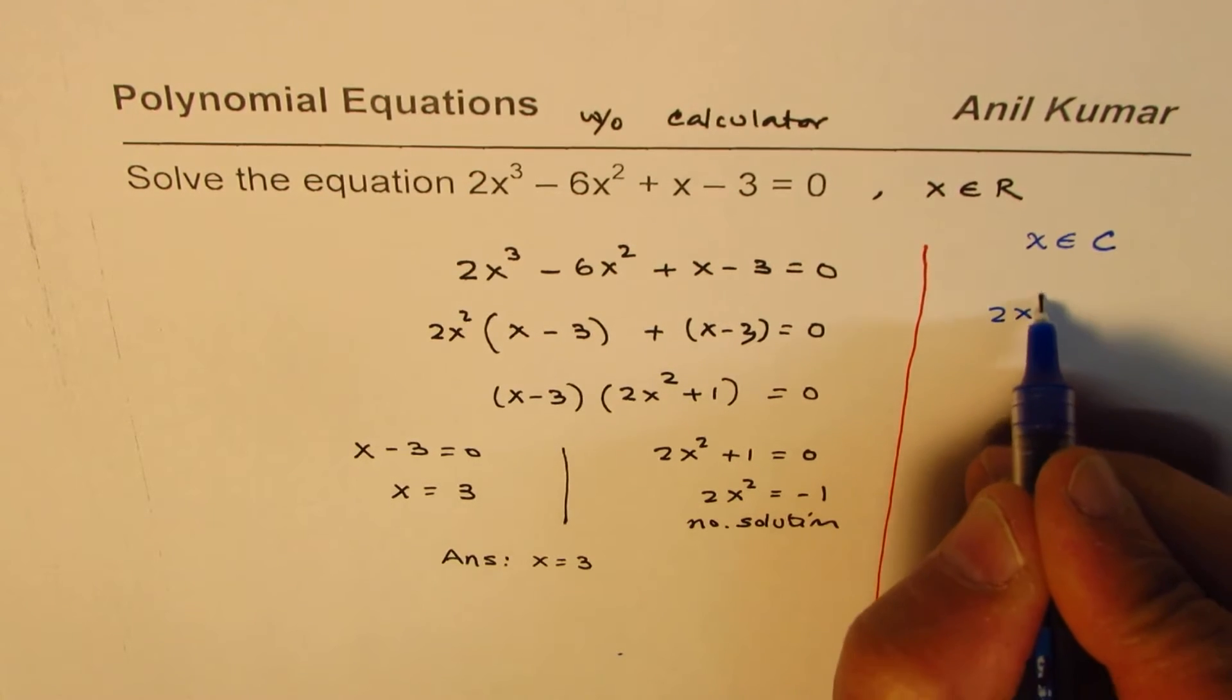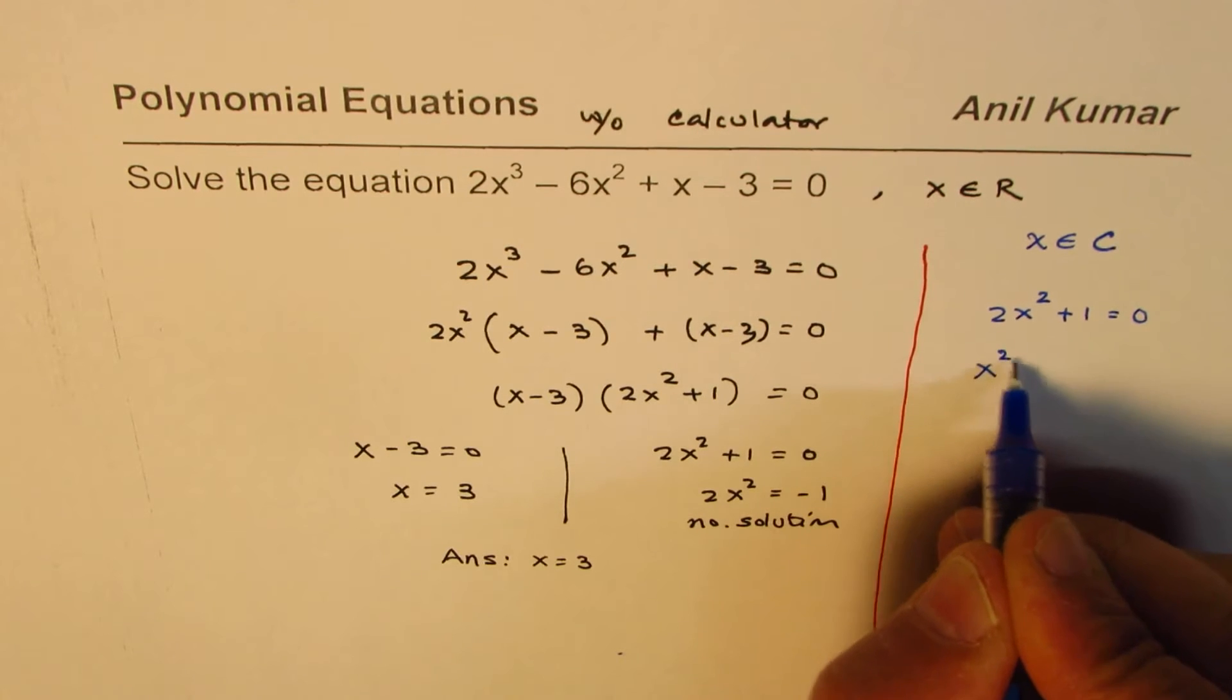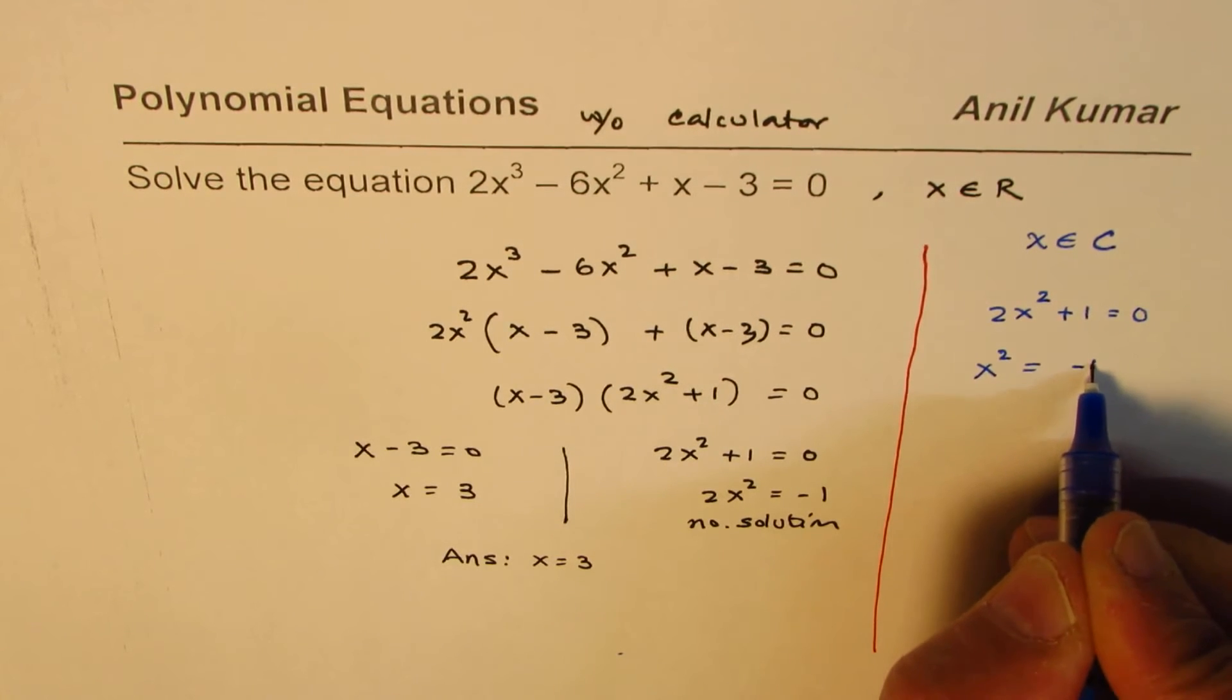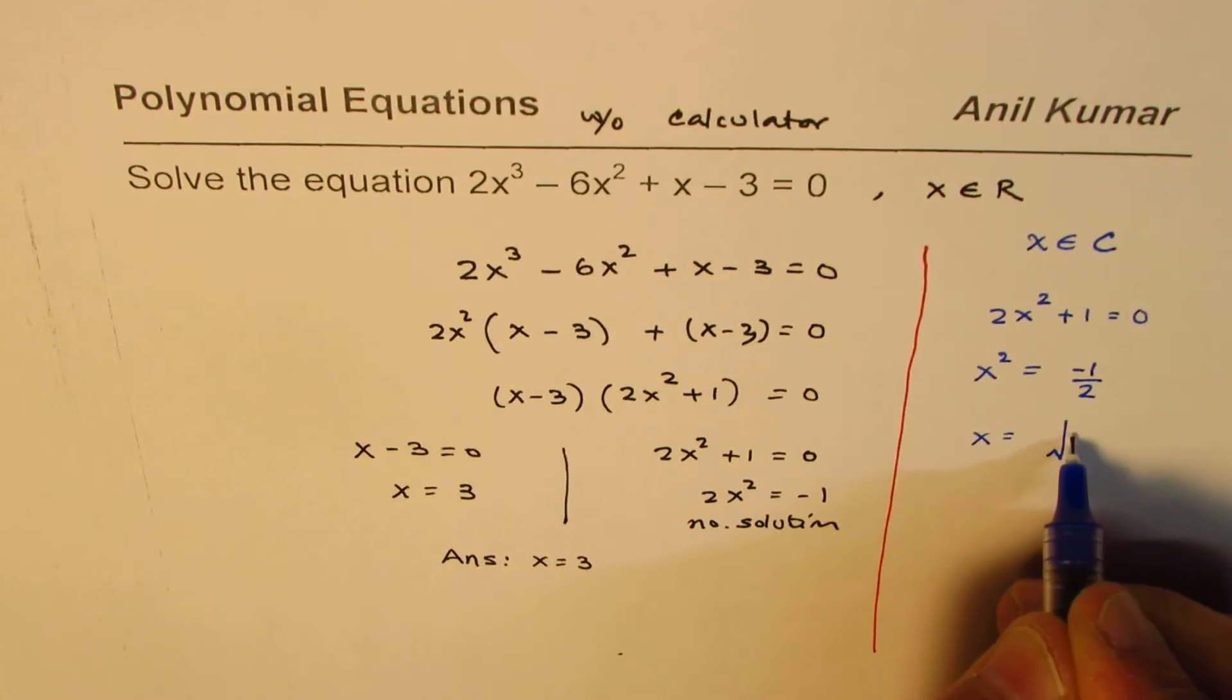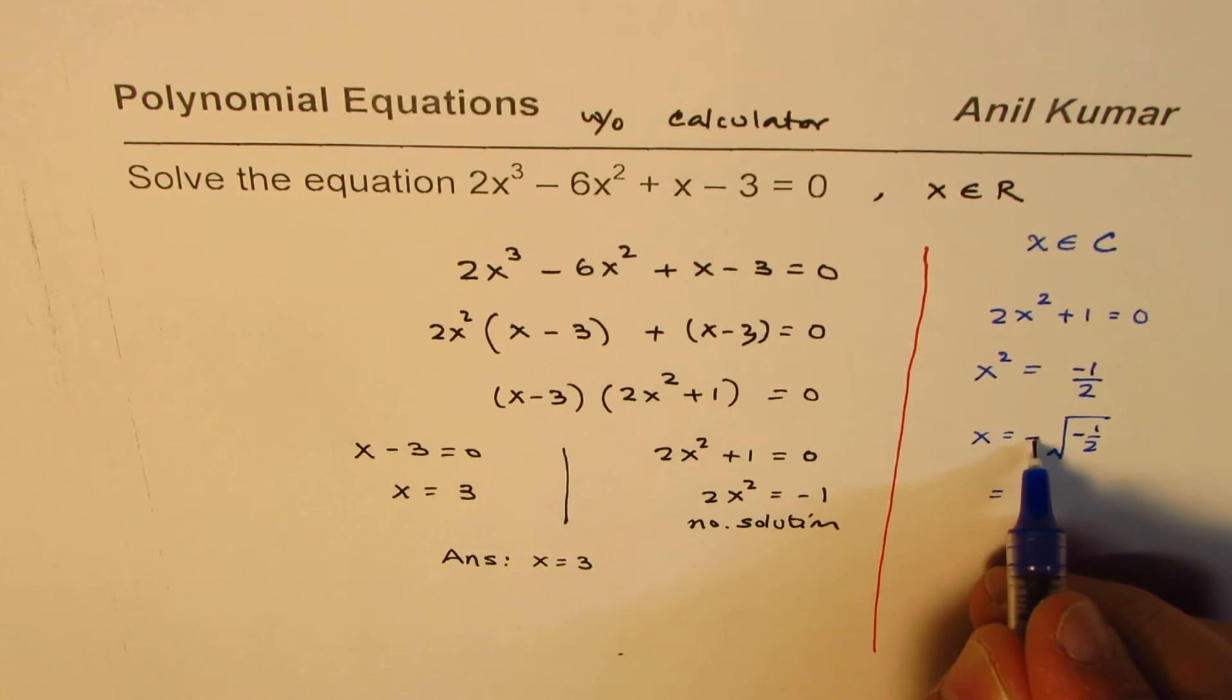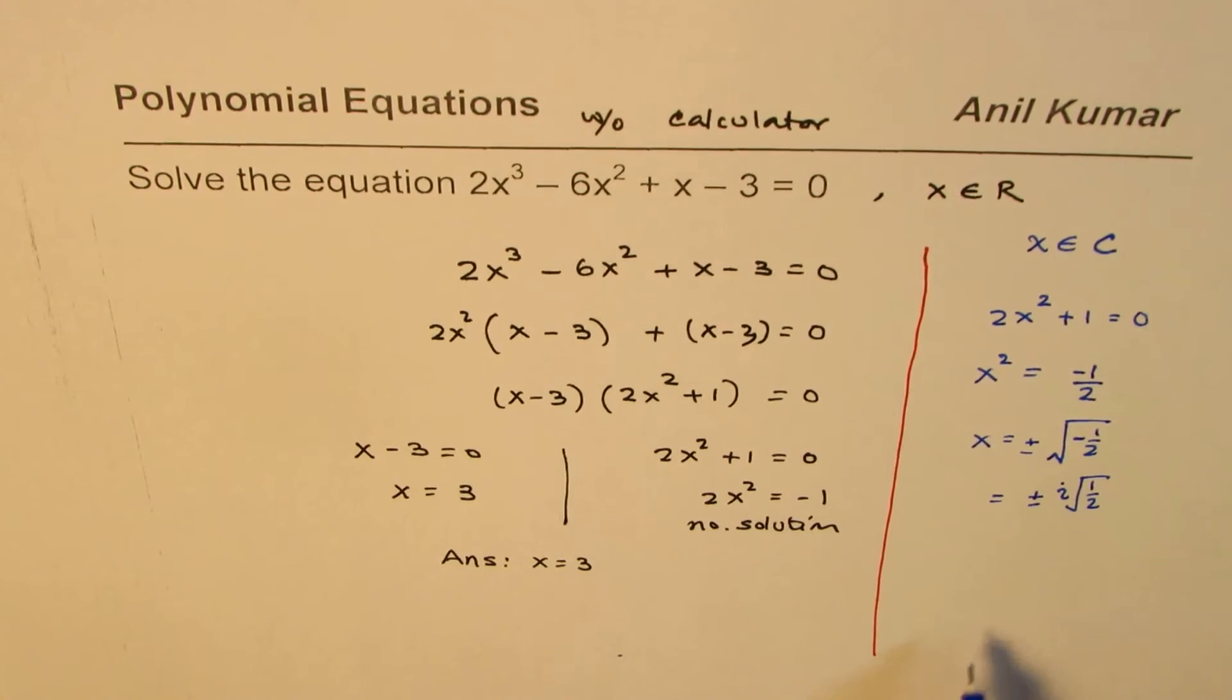In that case we'll have solution for 2x² + 1 = 0 also. So we'll get x² = -1/2. x is the square root of minus half. Now square root of -1 is iota, so it is plus minus i over square root 2, so we get plus minus i square root of half.